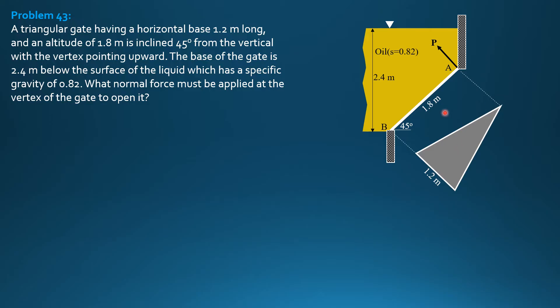Therefore, the location of the centroid is 2 thirds of 1.8 or 1 third of 1.8 from the bottom. So the distance of the centroid from A is 1.2 and its distance from B is 0.6 meter. And at this point acts the oil fluid pressure force F.